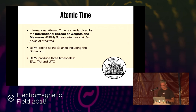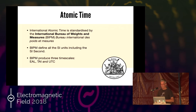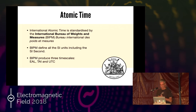Atomic time is put together by the International Bureau of Weights and Measures — they look after the SI second and all of the SI units, based in Paris. In terms of timekeeping they look after three timescales: EAL, TAI, and UTC. We'll get into those in a second.